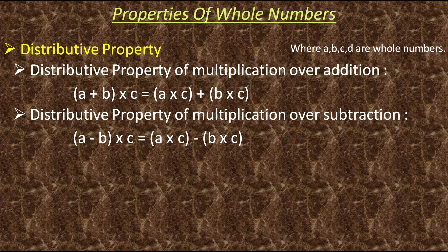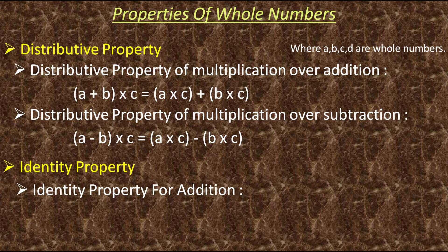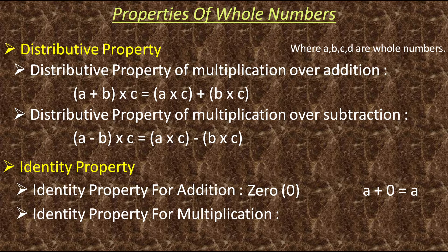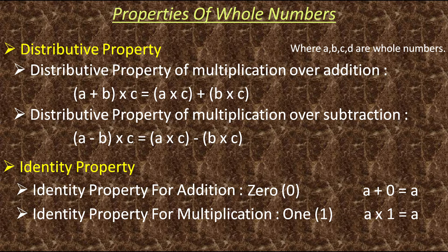Next comes identity property. Identity property for addition is 0 because a plus 0 is equal to a. Same way, identity property for multiplication is 1 because a into 1 is equal to a. So here we finish with all the properties.